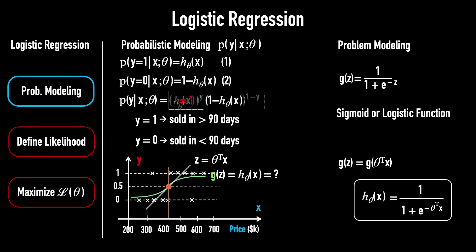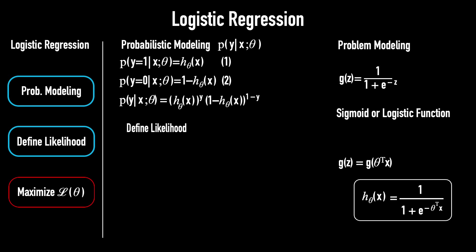If y = 0, the first term becomes 1, and the second term becomes 1 - h(x). This matches the second equation. Now, let's move on to step 2 of our framework. Define the likelihood of θ.